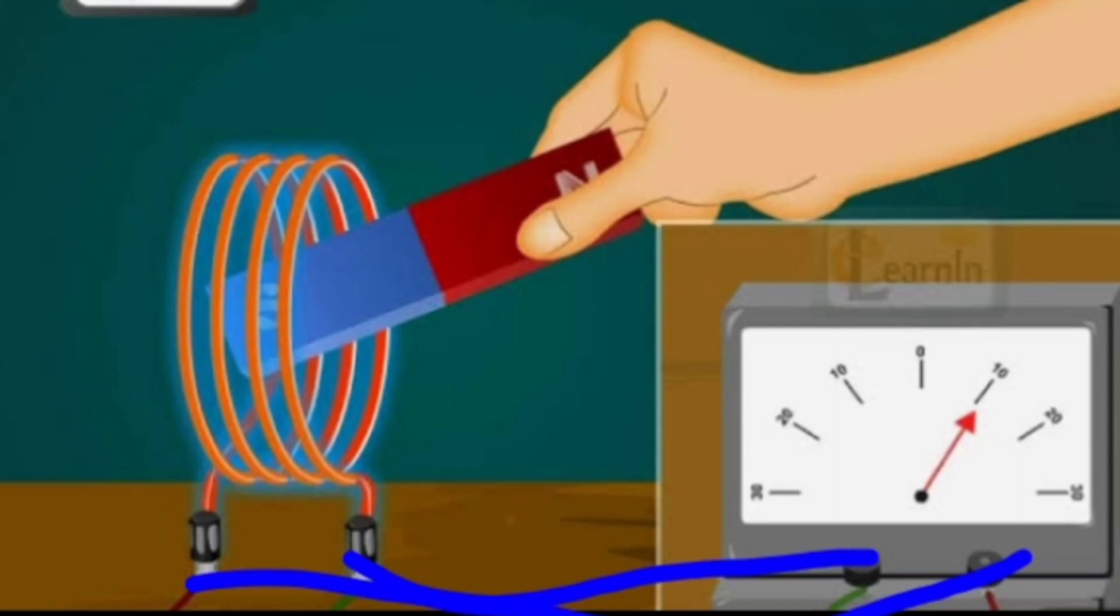The entire result is reversed when he worked with the south pole. When you have the south pole moving towards the coil, you have left side deflection. When moving away, you have right side deflection.